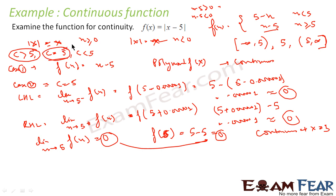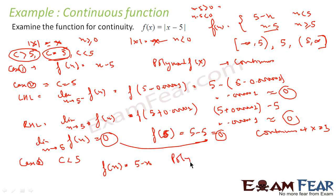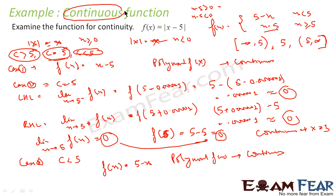Let's take Case 3: c < 5. My equation is f(x) = 5 - x. This is again a polynomial function, and we have just proved that polynomial functions are continuous. Since it is continuous here also, my function is continuous at all points. So I can say that yes, the function f(x) = |x - 5| is a continuous function.